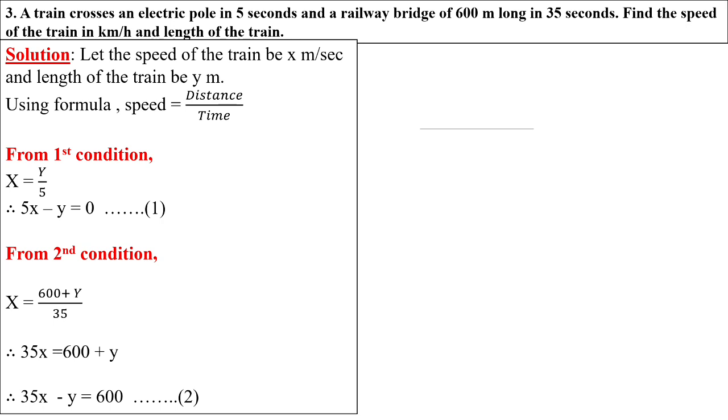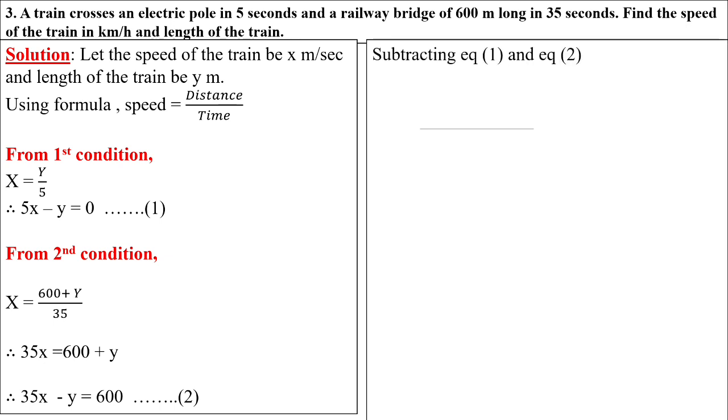In the first equation we have minus y, in the second equation we also have minus y, so what we'll do is subtraction. Subtracting equation one and two, when we do subtraction the signs change: 35x minus 5x equals 600, so 30x equals 600. Therefore x equals 600 divided by 30, which gives x equals 20.